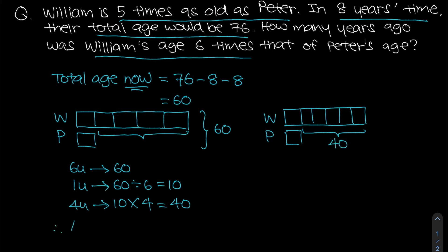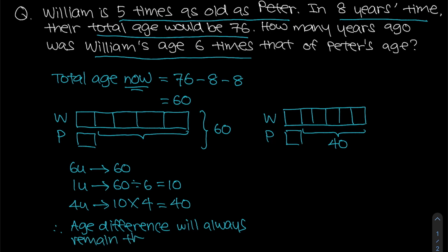The age difference will always remain the same — it does not matter whether it is now or eight years later, the age difference stays constant. From the second model, five parts equals 40. One part is therefore 40 divided by 5, which gives us 8.